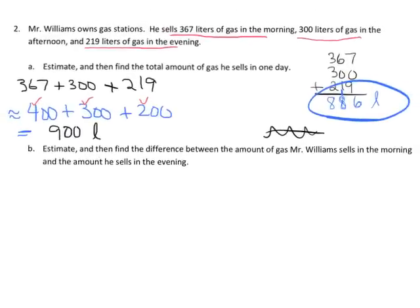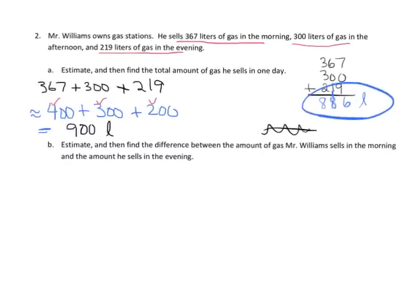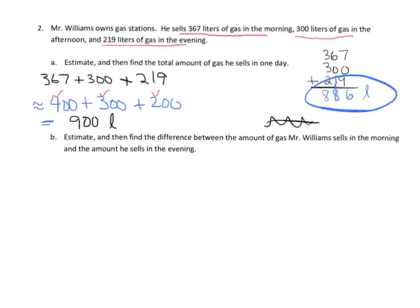Our estimation was 900, so that means we were probably correct. Our estimation and our answer are close, so it's likely that our answer of 886 liters is correct. Let's move on to the next example.